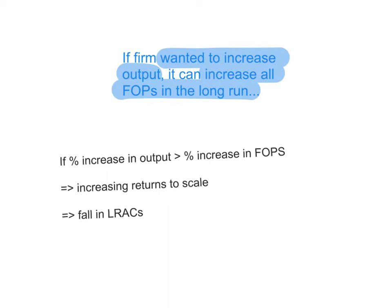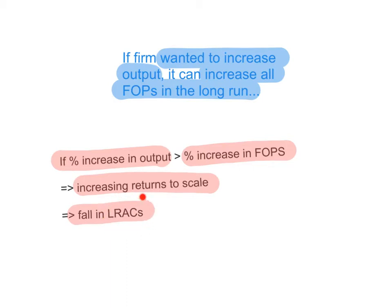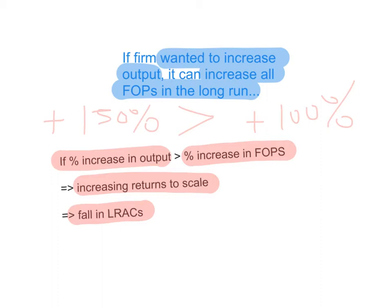Now let's have a look at the three scenarios — one of those three scenarios will always happen. If the percentage increase in output is greater than the percentage increase in the factors of production, we say this firm has experienced increasing returns to scale, and this will lead to a fall in long run average costs (LRAC). For example, if a firm doubled its factors of production — inputs increased by 100% — but output increased by 150%, that's increasing returns to scale, and the firm will see its long run average cost falling. That's a positive thing.